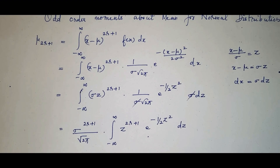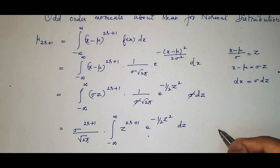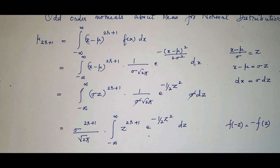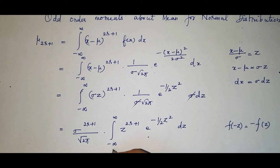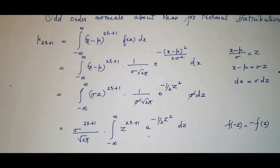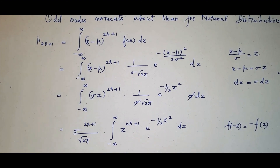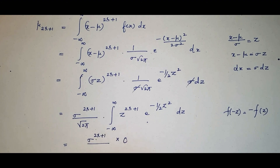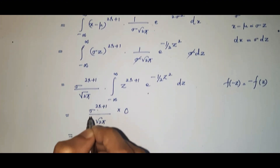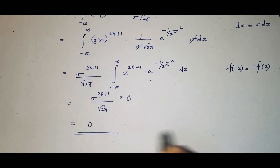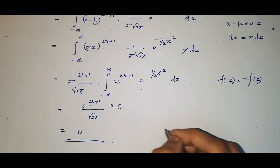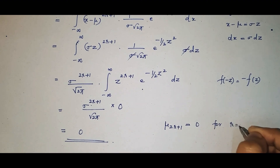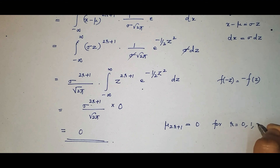The integrand z^(2r+1) · e^(−z²/2) is an odd function, since f(−z) = −f(z). Therefore, integrating an odd function from minus infinity to infinity gives zero. So the result is 0 · σ^(2r+1) / √(2π) = 0. Therefore, the odd order moment μ₍₂ᵣ₊₁₎ = 0 for r = 0, 1, 2, and so on.